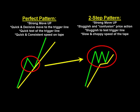Let's look at the left side. A perfect pattern looks like this. It's a strong move up or down — in this case a long trade, so a strong move up. Then a quick and decisive move right to the trigger line, which is this yellow line here, and then a quick test of the trigger itself. We're looking for quick and consistent speed of the tape or the time and sales window — a quick and decisive pullback and test of the trigger line.